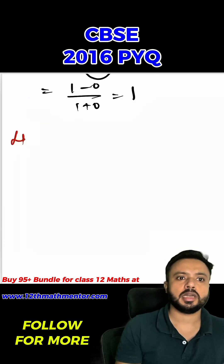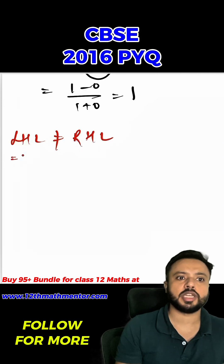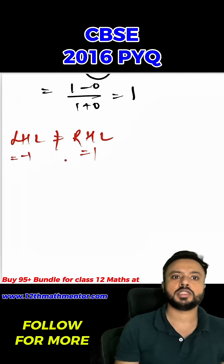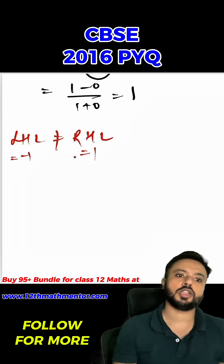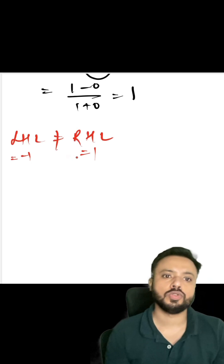Clearly, LHL is not equal to RHL because LHL value is negative one and RHL value is positive one. Hence f(x) is discontinuous at x equal to zero.